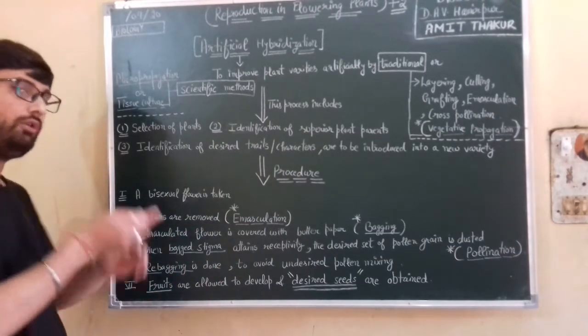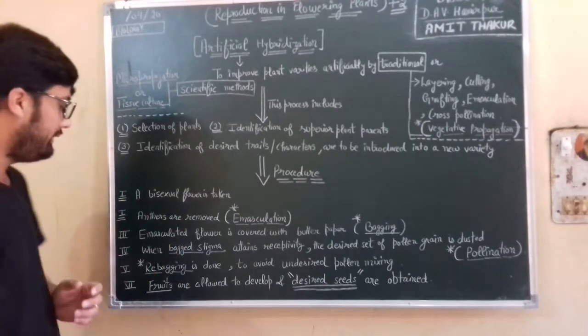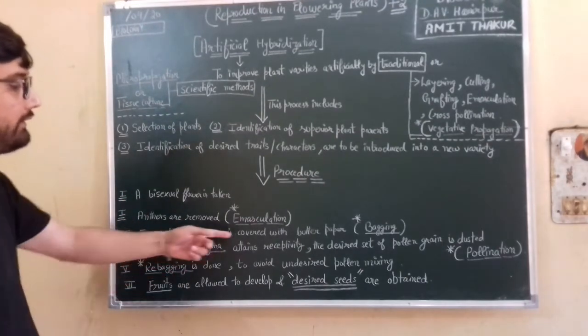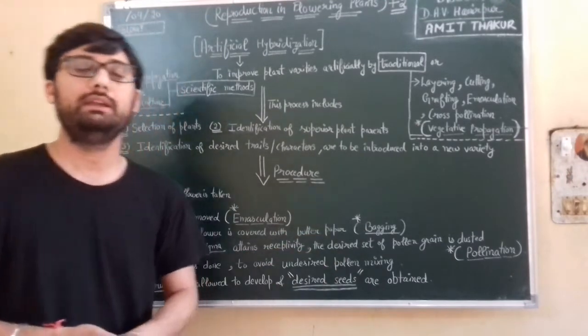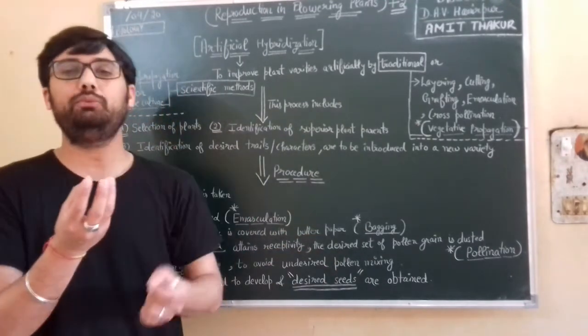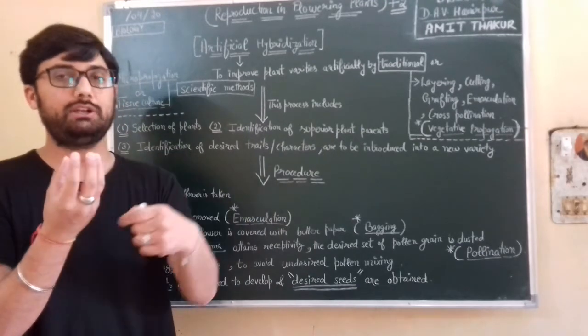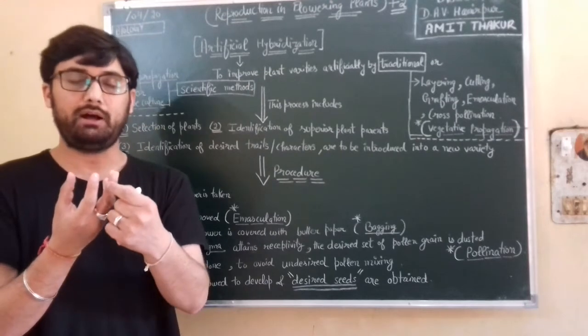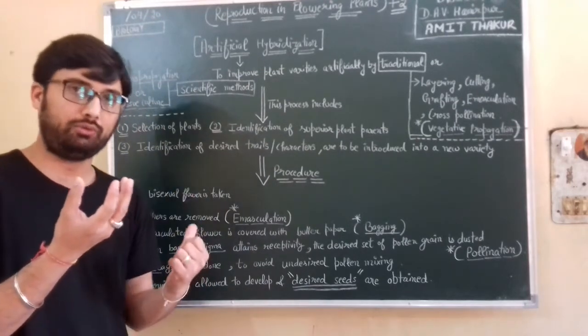That emasculated flower is covered with butter paper, which is known as bagging. Like you remove anthers from there, what will only be left? Female reproductive part. What will be left in that flower? Female reproductive part because you have removed the anthers, which is known as emasculation.